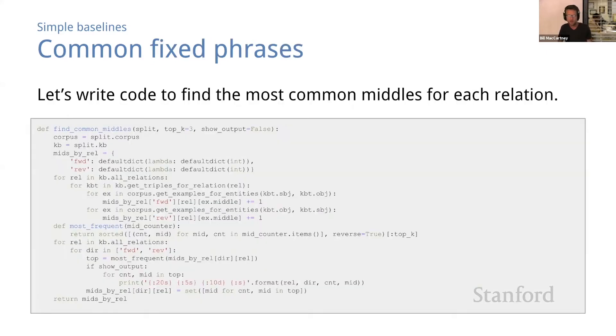Let's look at another approach which is very simple but smarter than random guessing. It's a simple pattern matching strategy. The idea is for each relation, let's go through the corpus and find the most common phrases that connect two entities that stand in that relation—the most common middles in our terminology. Here's some code that does that.